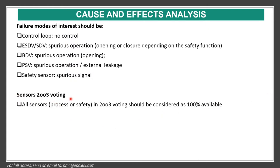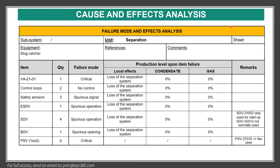All sensors with two-out-of-three voting should be considered as 100% available. This is a typical cause and effect analysis — here is a slug catcher. We have to give references to the P&ID and other documentation. The failure mode is critical: loss of separation function. Then we assess the control loop, safety sensor, ESDV, shutdown valve, blowdown valve, and PSV. Because it is one-of-two, we don't discuss it further — if one doesn't work, the other works.